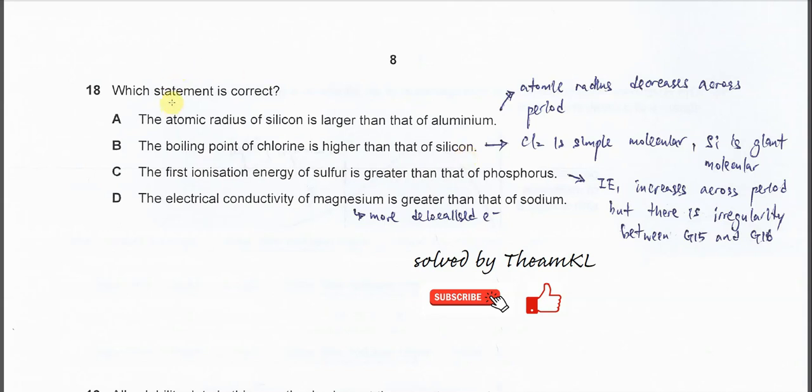Question 80. Which statement is correct? A. The atomic radius of silicon is larger than aluminum.